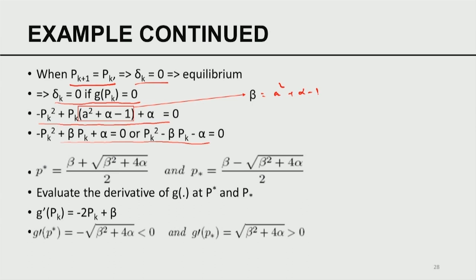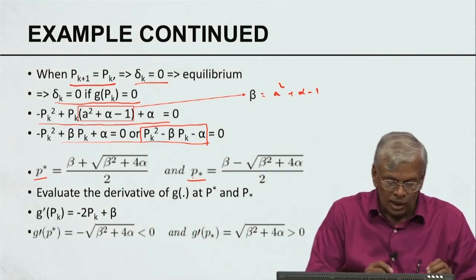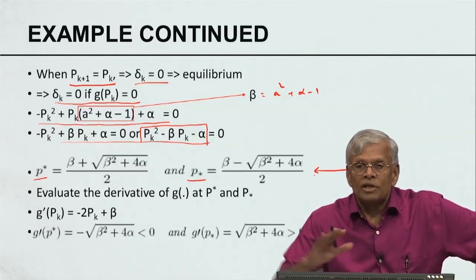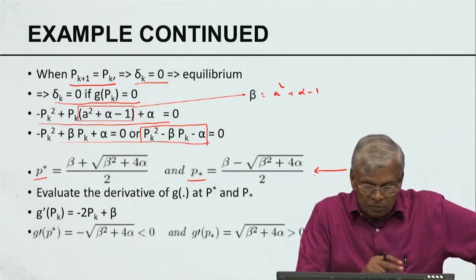This calls for analyzing the behavior of the numerator polynomial, which is equated to 0 and rewritten by changing variables. I define a new variable beta equal to A² plus alpha minus 1, where A is the model parameter and alpha is the ratio of the two variances — model noise to observation noise. The polynomial becomes a second-order polynomial in p_K, and applying the standard quadratic formula, there are two roots: p superstar and p sub-star. These expressions depend only on beta and alpha, and recall beta depends on A and alpha.